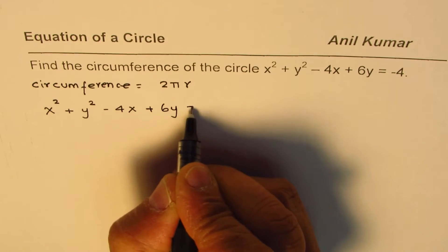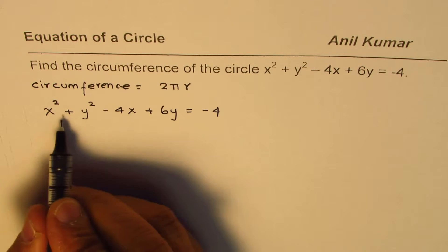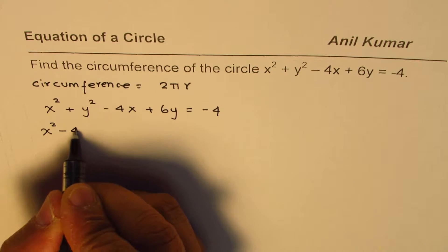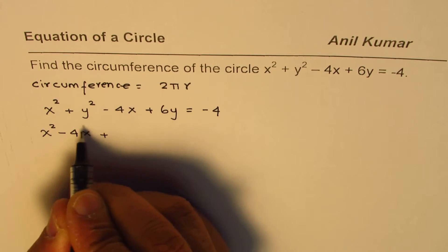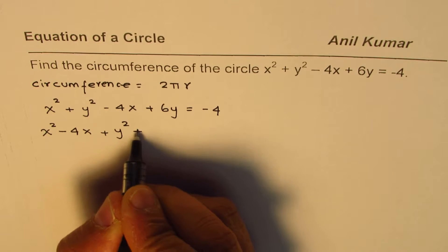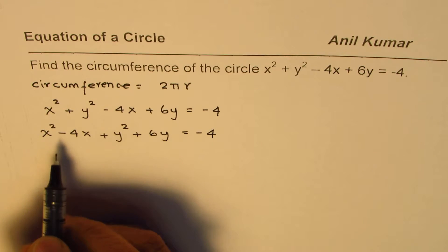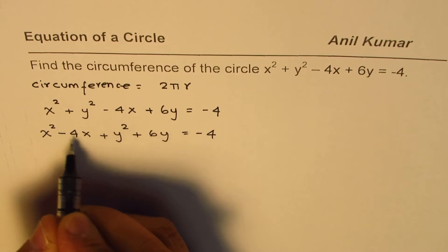So let me rewrite this. That's the equation given to us. Now what we can do is combine the x and y terms and then add terms so that we can complete the squares. So I'm rearranging these terms here, equals to minus 4. x square minus 4x. To complete the square I have to add and subtract half of 4 which is 2, square of that number. So let's do that.